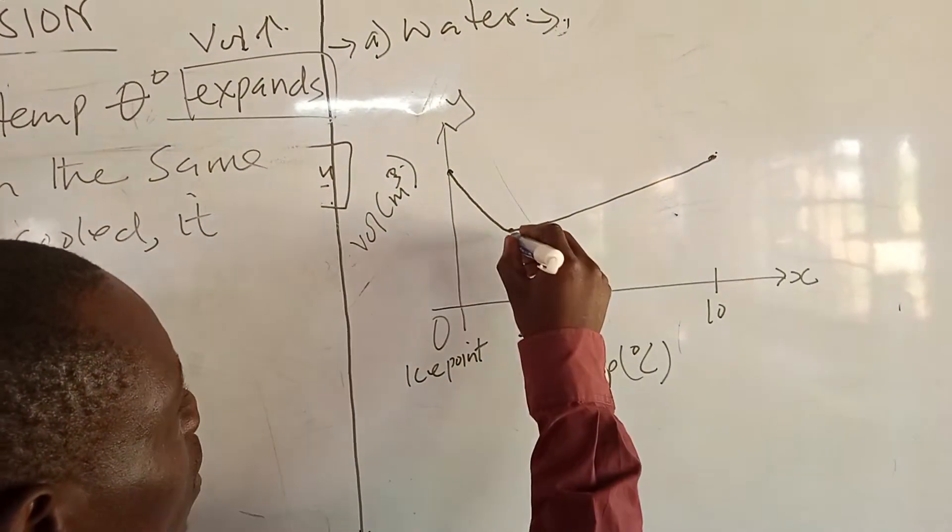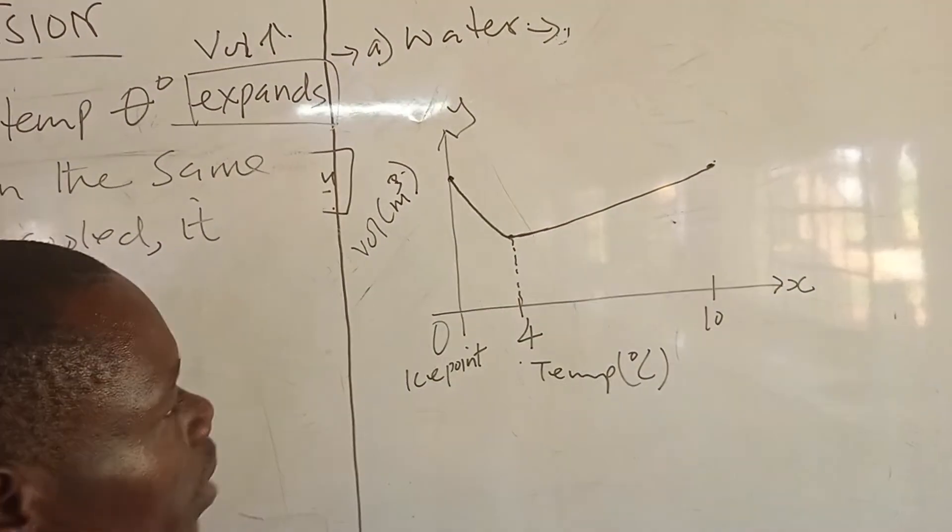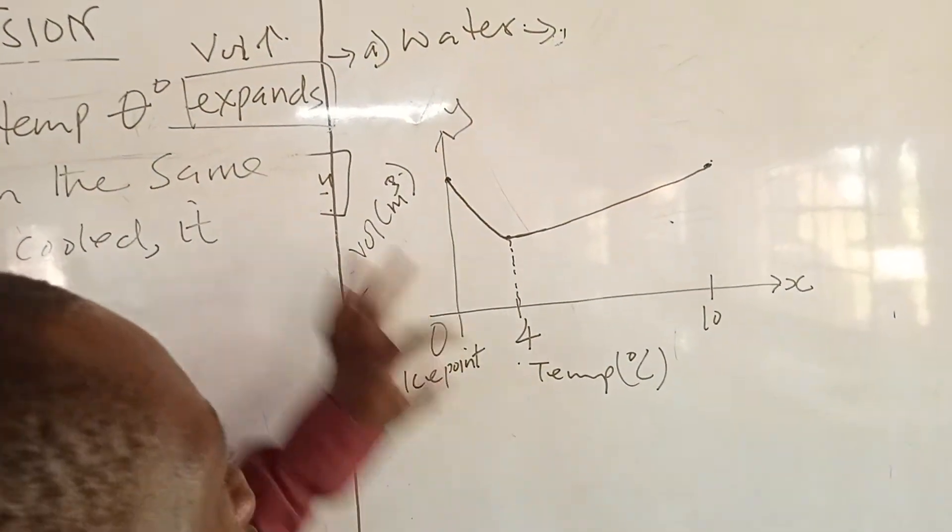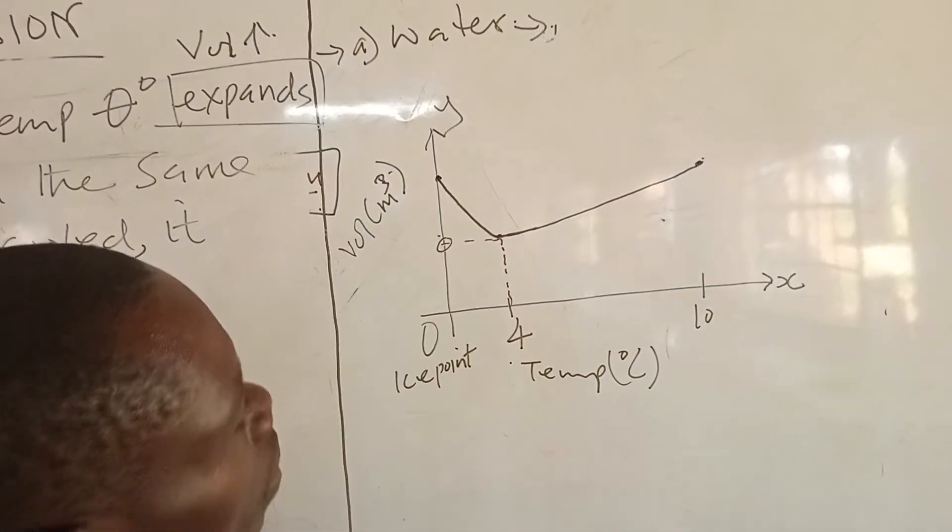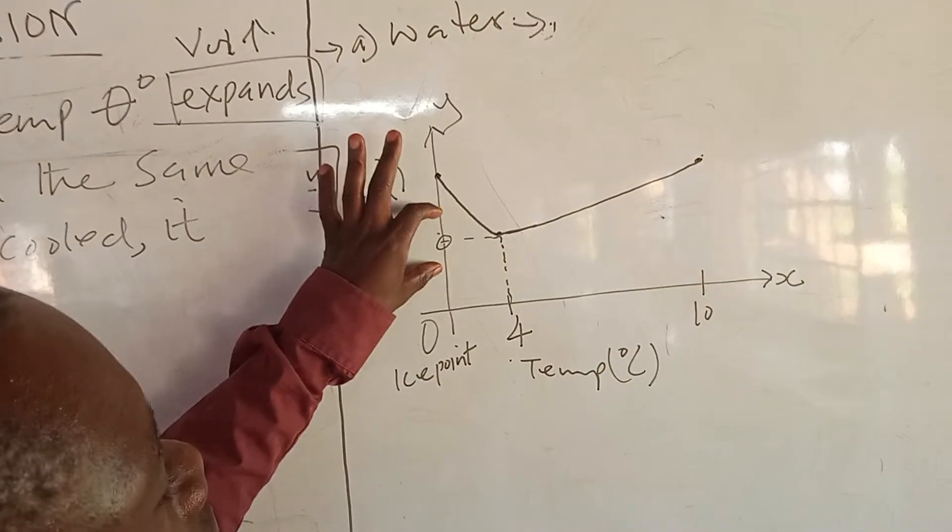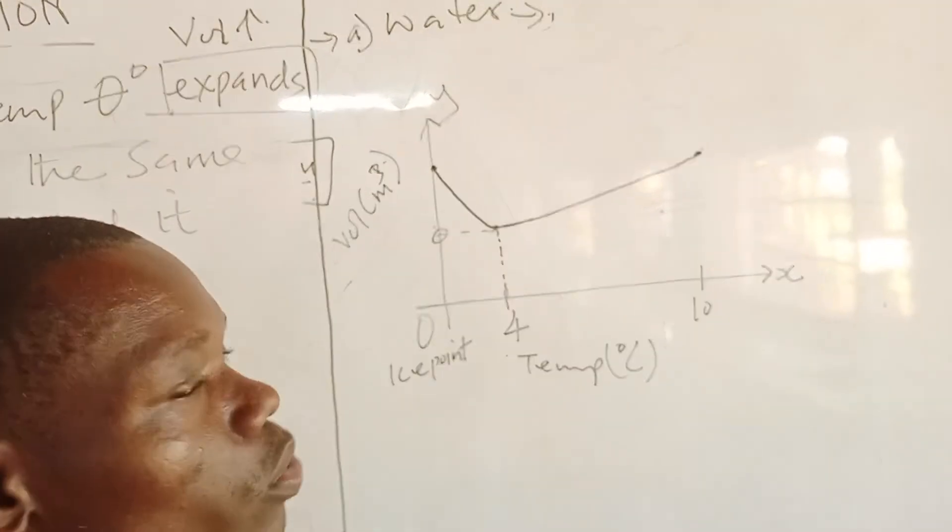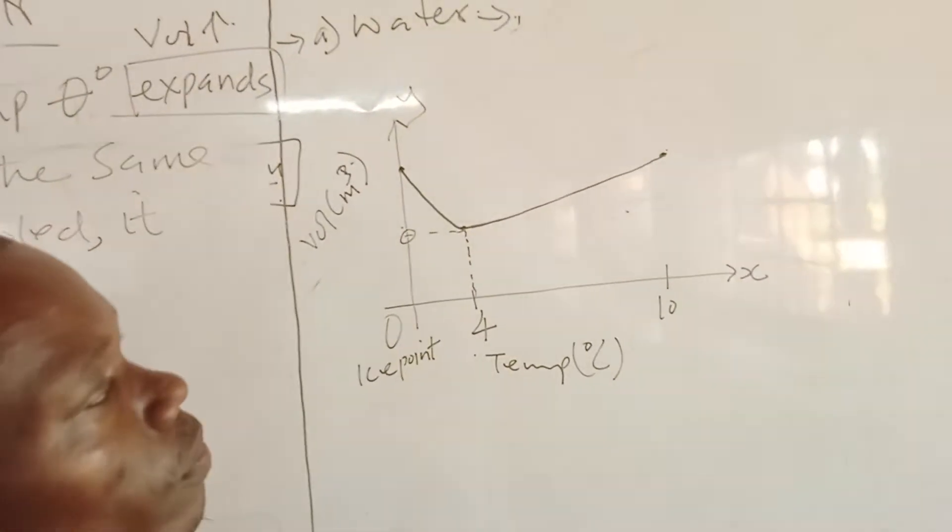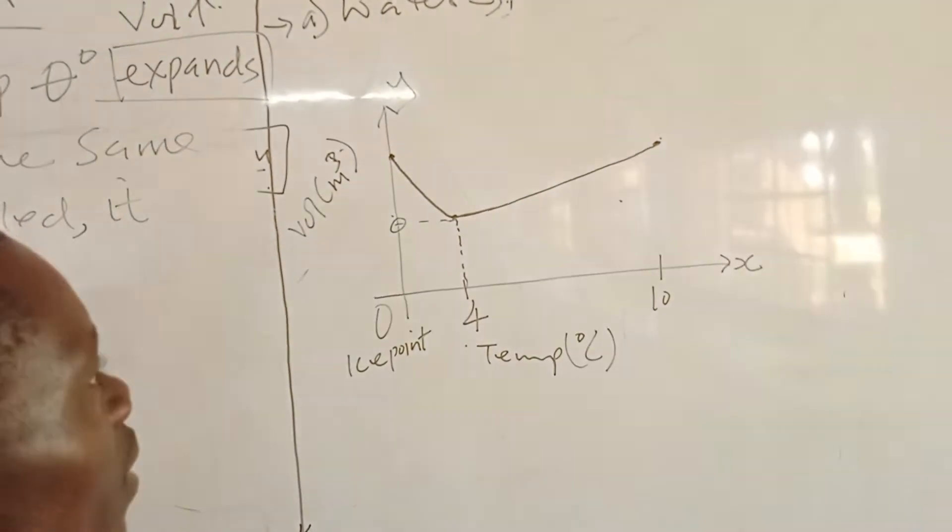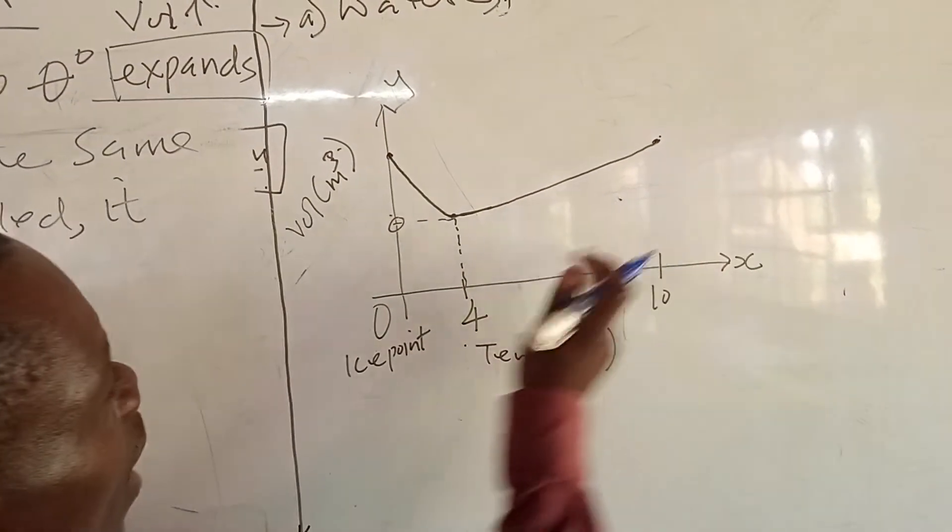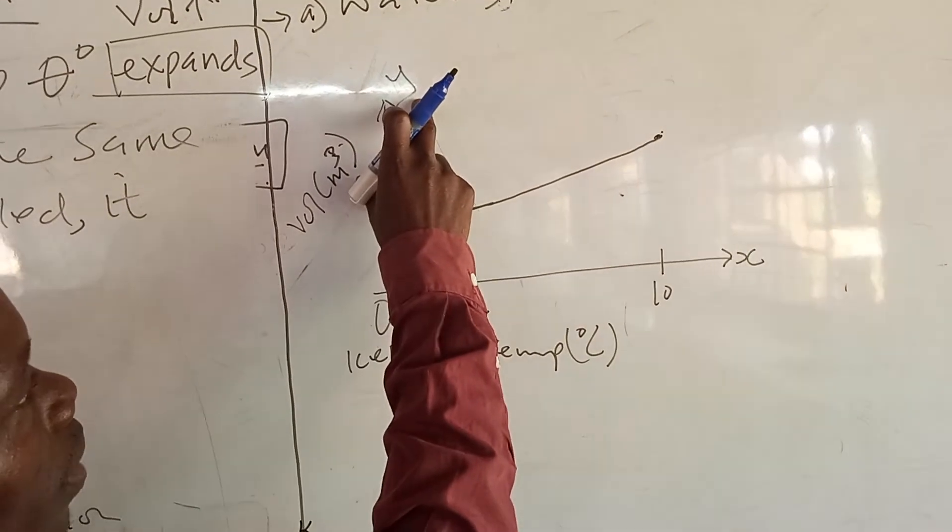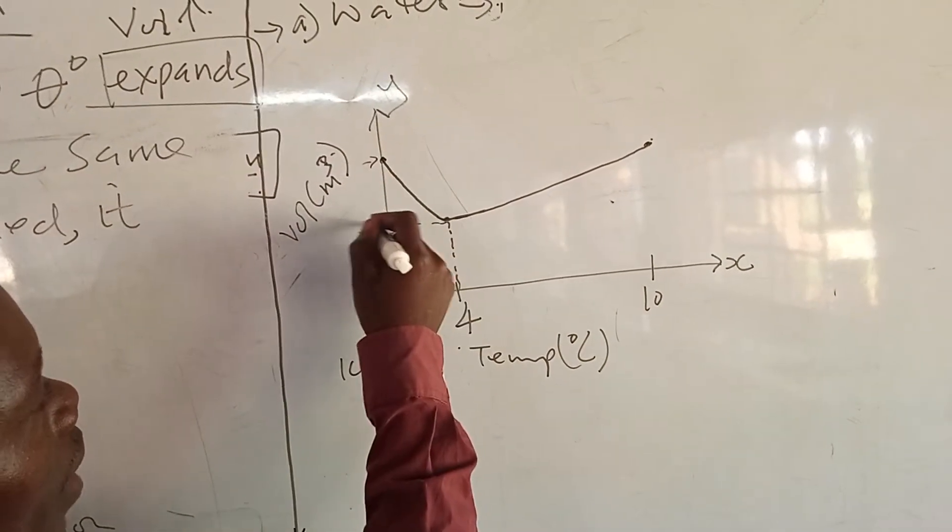Now, this graph tells us that water at 4 degrees has a very low volume, but high density. That's why warm water is always able to sink to the bottom of the pond, lake, or seas. But water at 0 degrees and water at 10 degrees has got very high volume. So, this value is higher than this value.